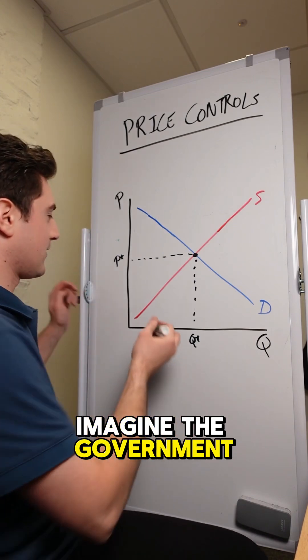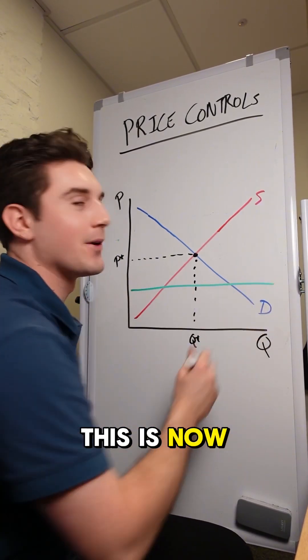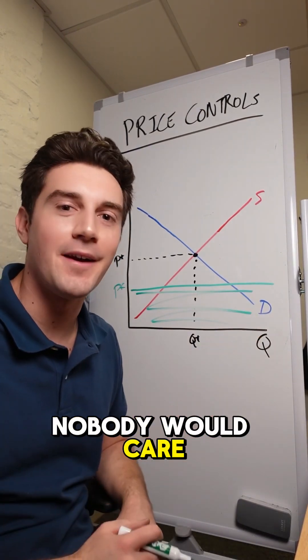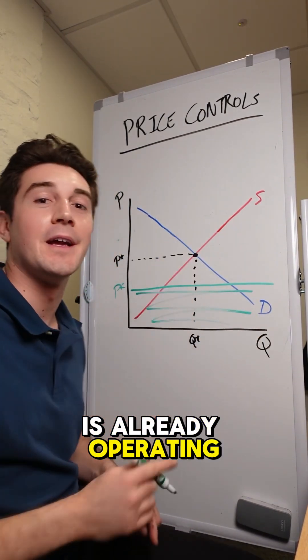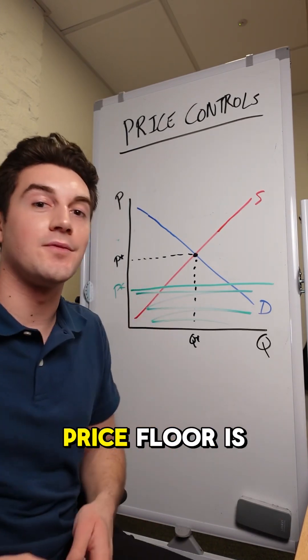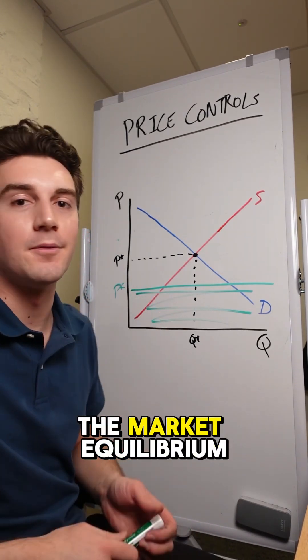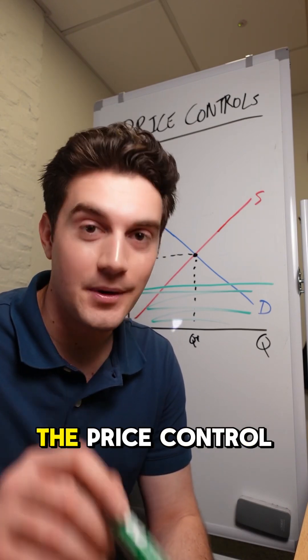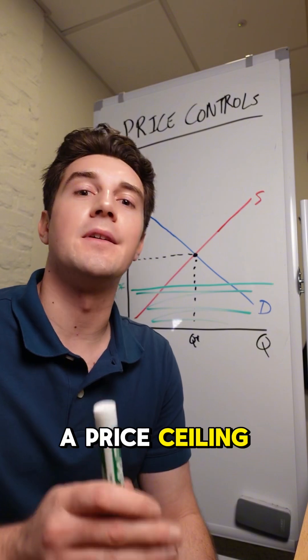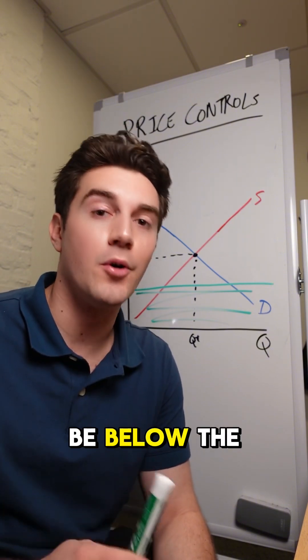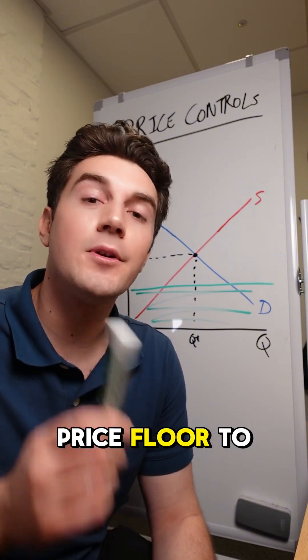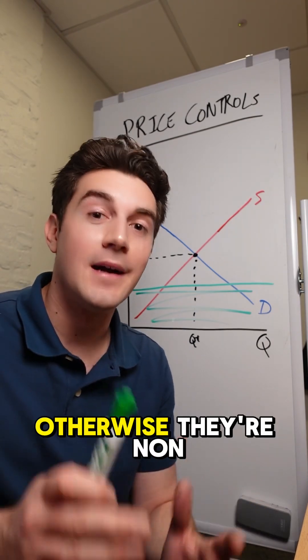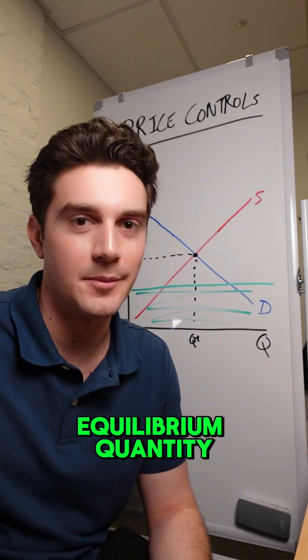Same would go with a floor. Imagine the government came in and said, hey, this is now our new price floor. Any prices below this floor are now invalid. Well, nobody would care because the market is already operating above that floor. Therefore, this non-binding price floor is not going to impact the market equilibrium. It is very easy to just start solving a problem and not check whether or not the price control is binding. So remember for a price ceiling to be binding, it's got to be below the current equilibrium price. And for a price floor to be binding, it's got to be above the current equilibrium price. Otherwise they're non-binding and will not impact the market equilibrium quantity.